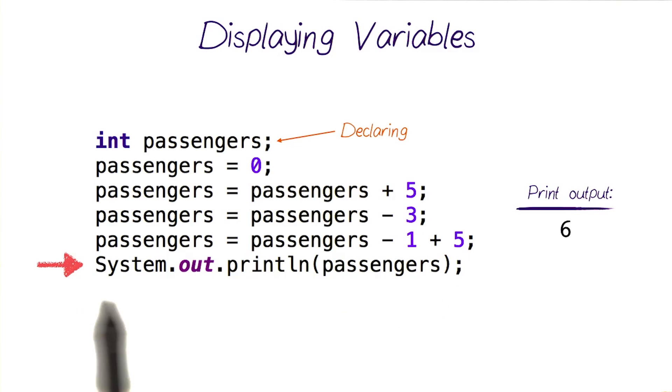By the time we reach this final statement here, our variable passengers will have 6 in it. And when we print it out, this is the output that we get.